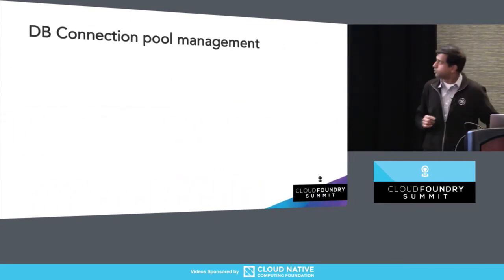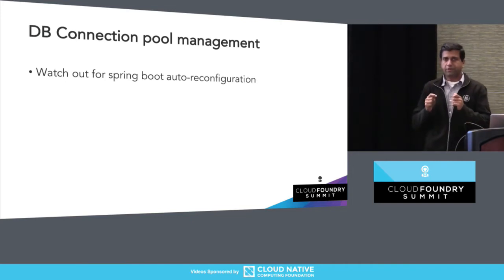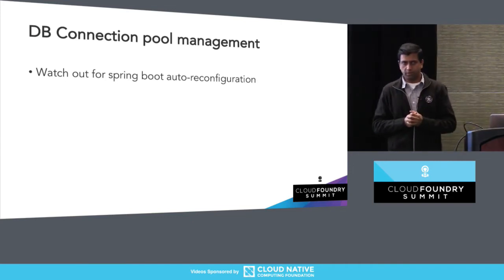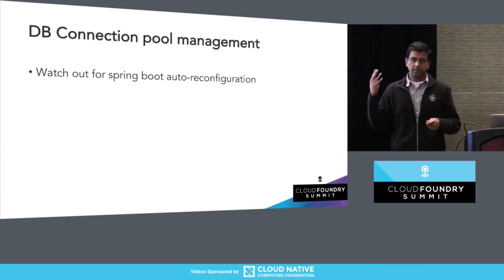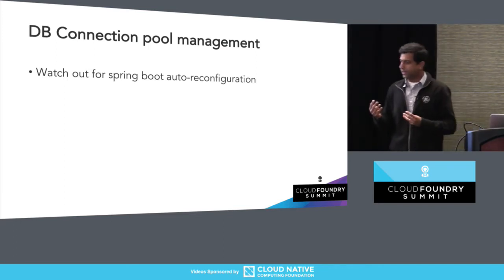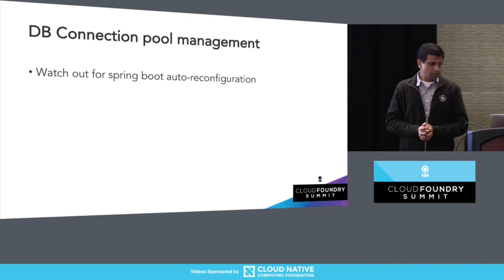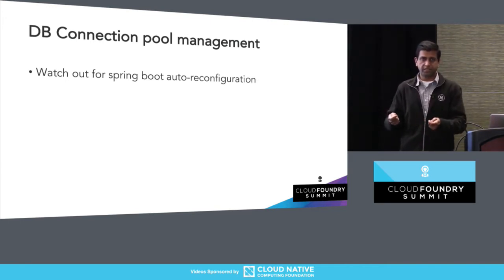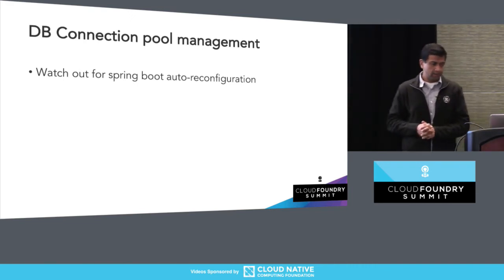Database connection pool management is another key factor to be conscious about, especially if your application is using Spring Boot. The Spring Boot reconfiguration — whether you've noticed it or not — automatically reconfigures your max active connections to four. I'm not sure why it does that, but this has been a very painful problem for us. This happens irrespective of whether your application is a production or development application pushed to the cloud. We had to override this auto-reconfiguration in our Spring Boot applications and set the max active values ourselves.